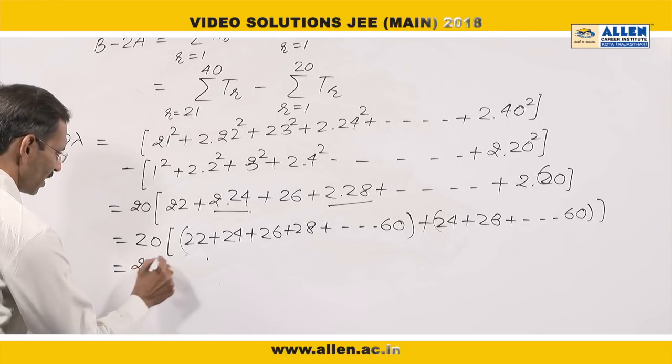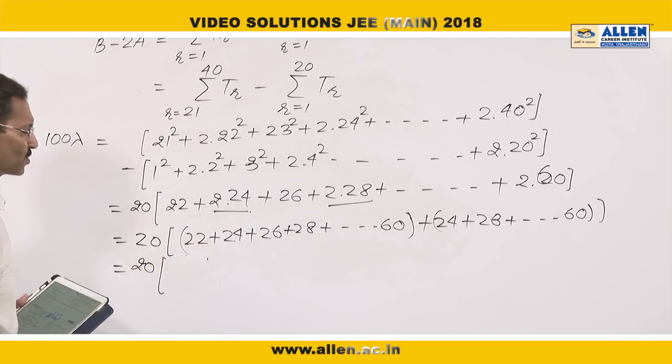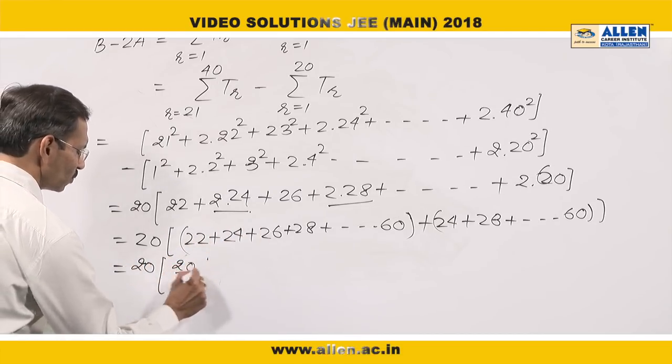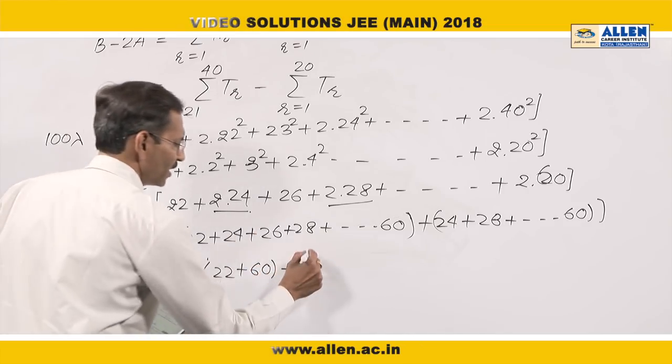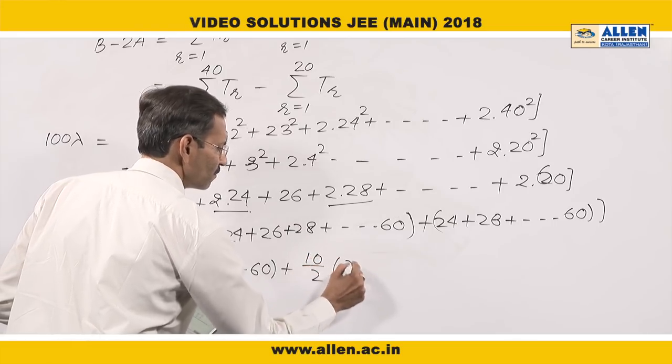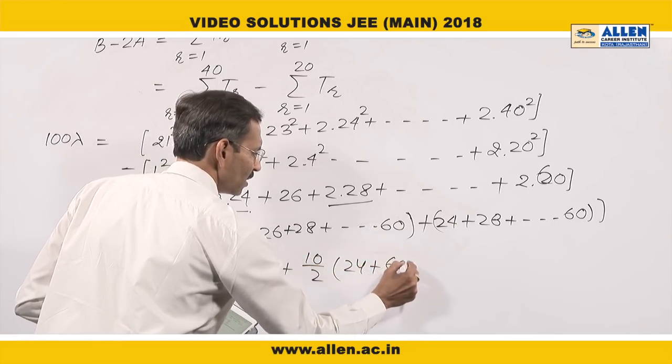20 multiplied by. These are 20 terms. So n by 2. First term plus last term. Again, n by 2. First term plus last term.